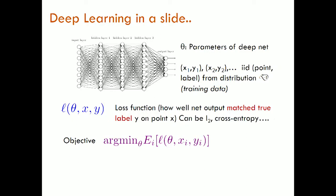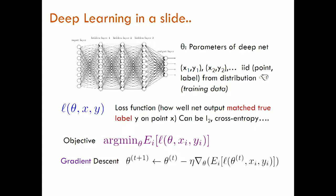The objective is to minimize this training loss on the training data. It's a non-convex and very non-linear function. You would imagine using some very sophisticated optimization algorithm, but actually all you use is gradient descent. Stochastic gradient descent is the analog where, because computing the full gradient is very expensive with millions of parameters and millions of training data, you just take an estimate of a few hundred data points. Because of linearity of expectations, the average of the gradient computed on that small sample is still an estimate for the full gradient.